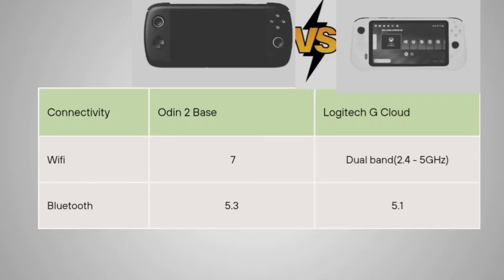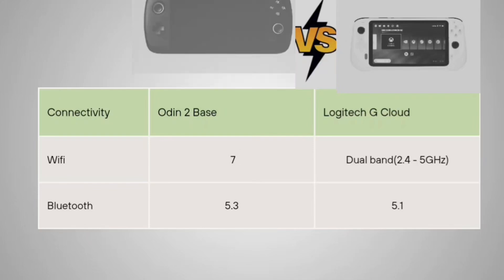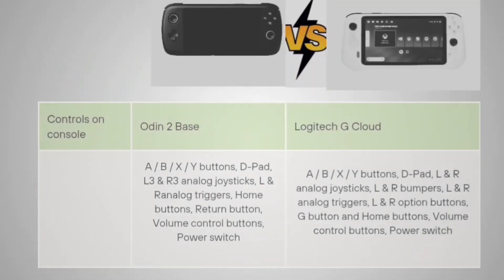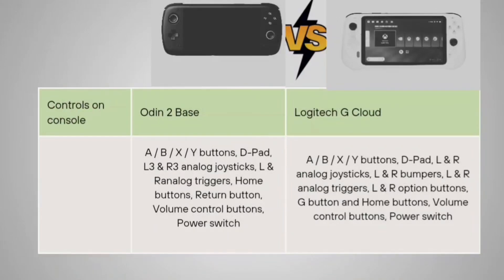Coming to the controls provided on the console itself: the Auden 2 Base is giving you A, B, X, Y buttons, D-pad, L3 and R3 analog joysticks, L and R analog triggers, home button, and return button.